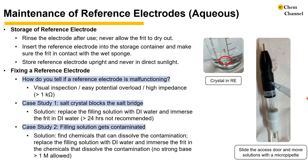If a chemical contaminates our reference electrode, we will need to identify the chemical and find a solvent that can dissolve it. As long as the solvent is not a base stronger than 1 molar potassium hydroxide, we can replace the filling solution with DI water and immerse the frit in the solution that dissolves the contaminating chemical. We do not recommend strong bases because they will dissolve the frit.